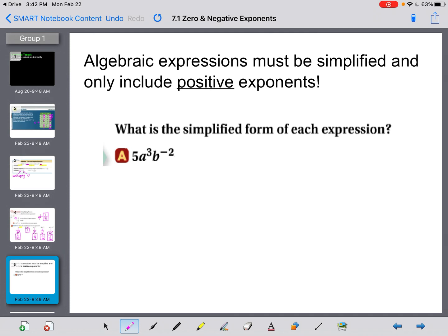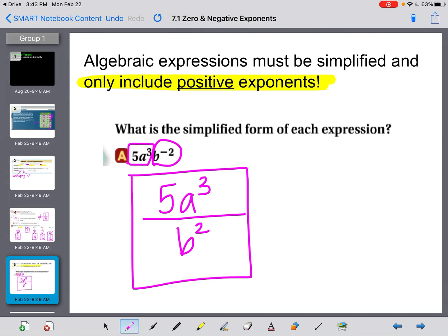An algebraic expression must be simplified and only include positive exponents. So we should never have negative exponents once we're finished simplifying. If I'm looking for the simplified version of this 5a to the 3rd times b to the negative 2nd, I can't do anything with this 5a to the 3rd. But I do know that this has to move down to the bottom of a fraction. So if I write a fraction, b to the 2nd power goes on the bottom. I didn't have to change any of this 5a to the 3rd. And there's nothing else that I can simplify. So this is my final answer.